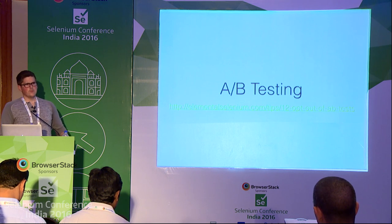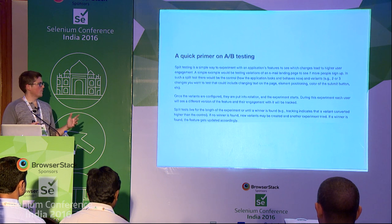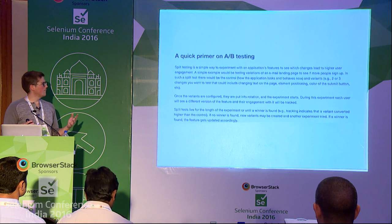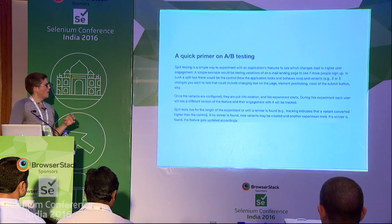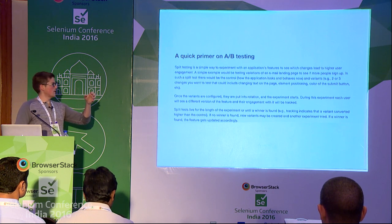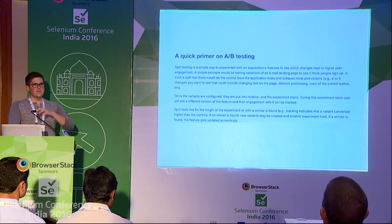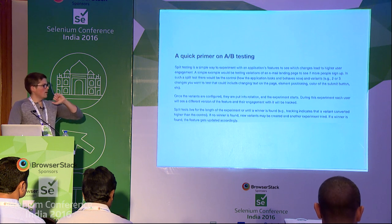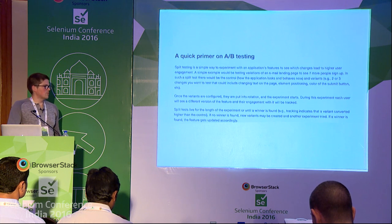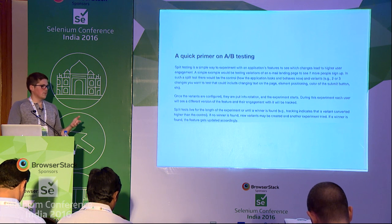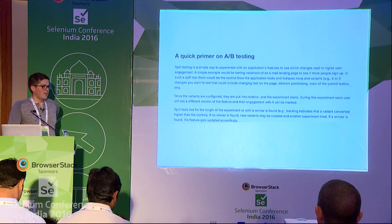The next one is A/B testing. Split testing is a simple way to experiment with application features to see which changes lead to higher user engagement. A simple example would be testing variations of an email landing page to see if more people sign up. There's the control — how the application normally looks — and then a couple of variants: changes like different text, color of buttons, or placement of elements. Once variants are configured they get pushed into rotation, each user gets a different version, engagement is tracked, and split tests live until a winner is found. That new winner becomes the control. It's kind of a nightmare for automated testing — you write a test against a thing, it should stay that way, and you're not aware it's going to change.